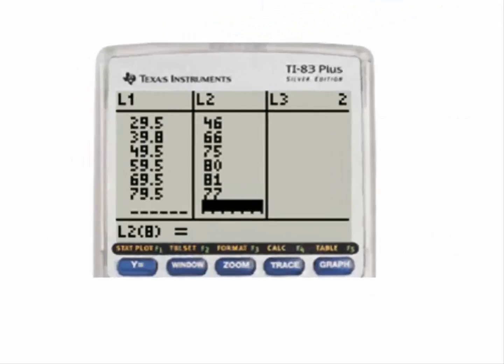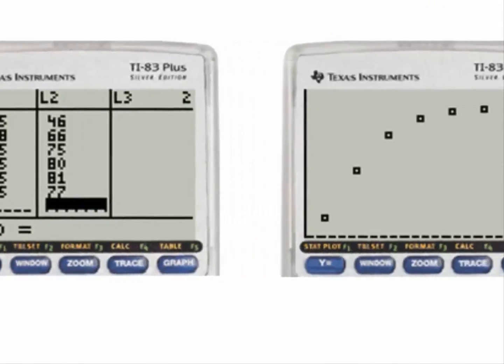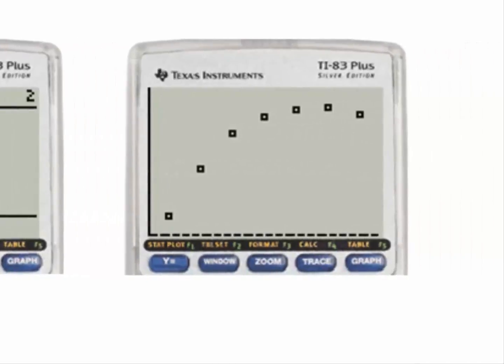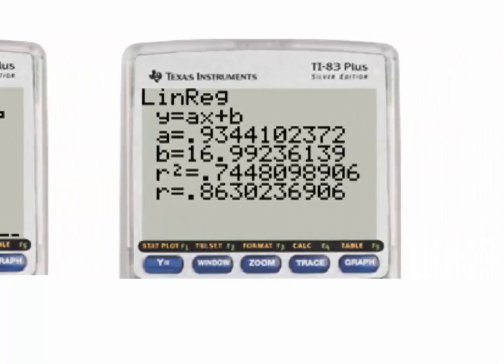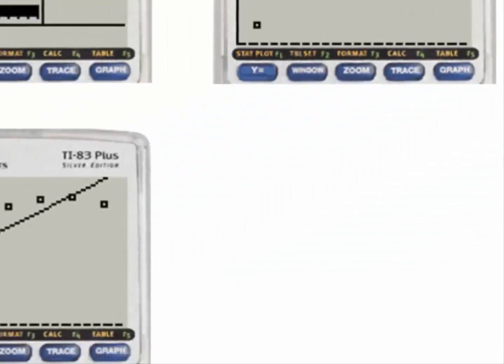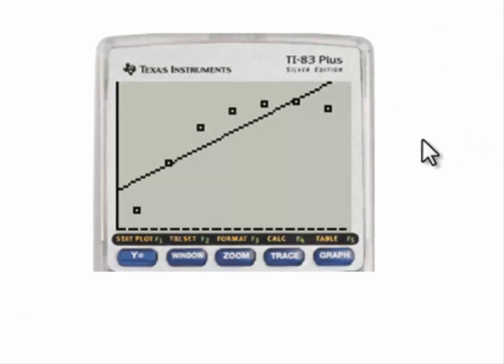For a, we enter the data in list 1 and list 2. We graph the data using our scattergram. To find the linear regression, we hit stat, calculate, then number 4, linear regression. r squared is 0.74. a, the slope, is 0.934. b, the y-intercept, is 16.99. Graphing the model with data, we see that the linear line is not doing a very good job of modeling the data.